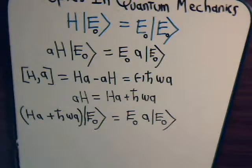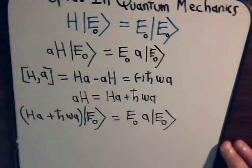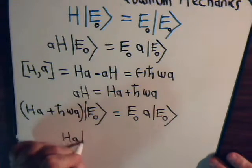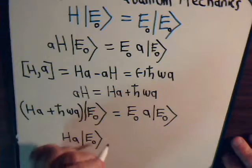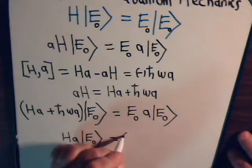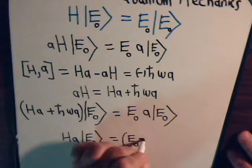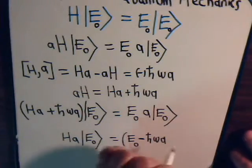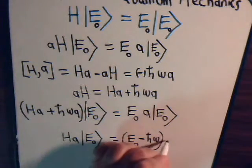Now what we want to do is bring this term over to this side of the equation. So what we will have is this is equal to, and on this side we bring this term over here. So now we're going to have E₀ minus ℏω A, just minus ℏω, and we'll take the A out like this.